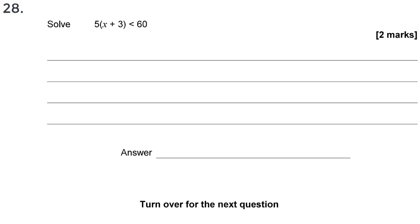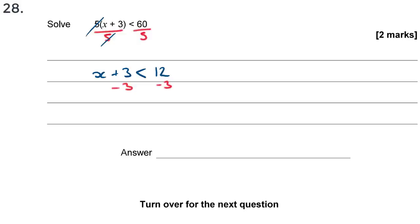Question 29: Solve 5(x + 3) < 60. Solve exactly as you would an equation. Dividing both sides by 5: x + 3 < 12. Subtracting 3 from both sides: x < 9. Note: the only extra rule for inequalities is that dividing or multiplying by a negative number flips the inequality sign.